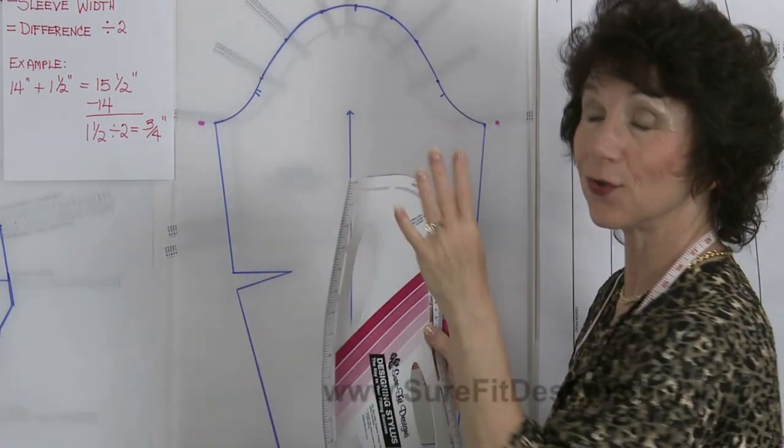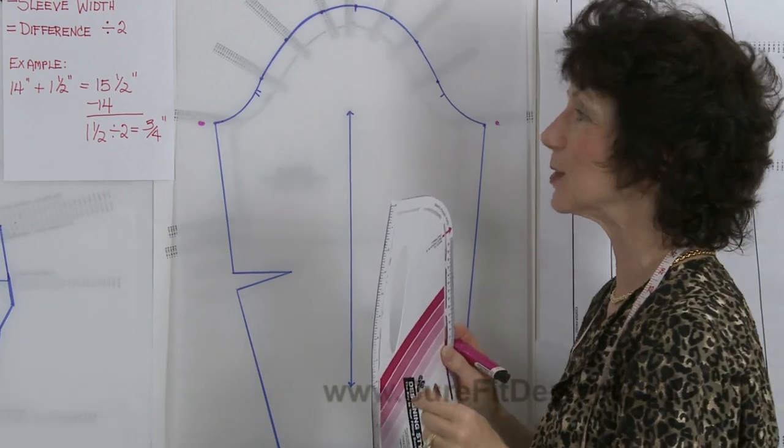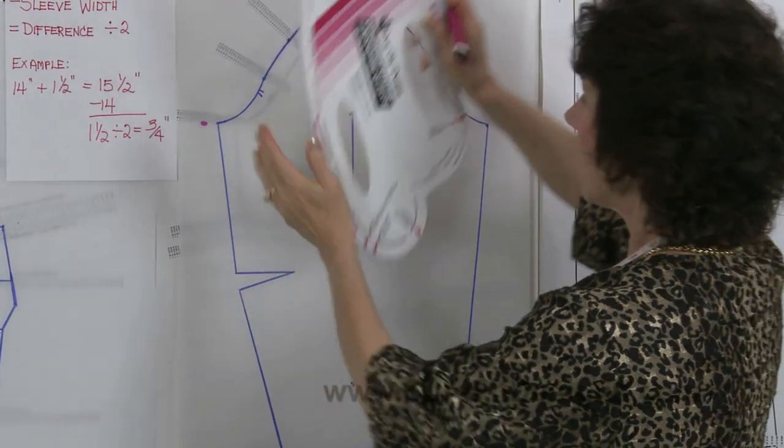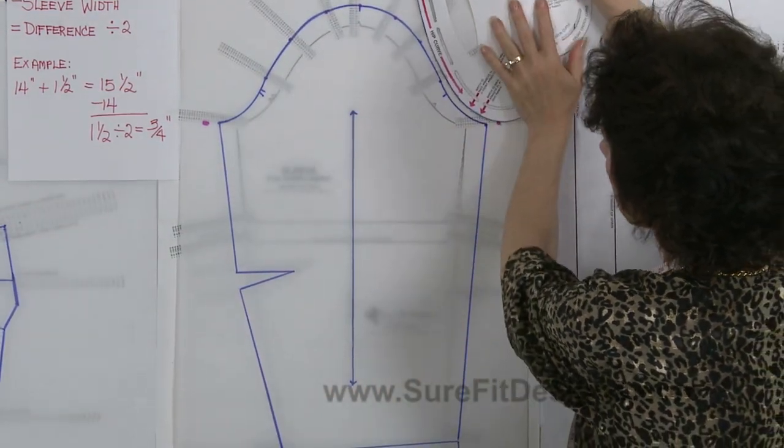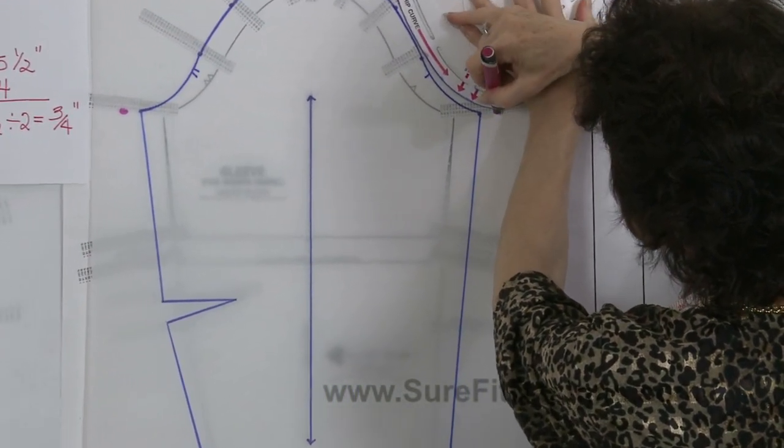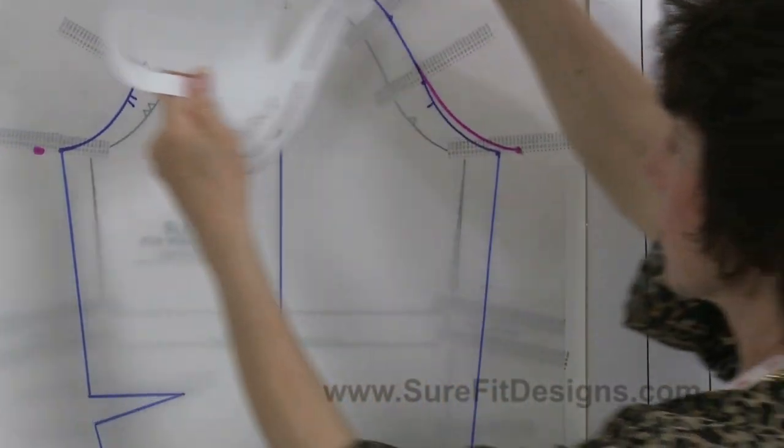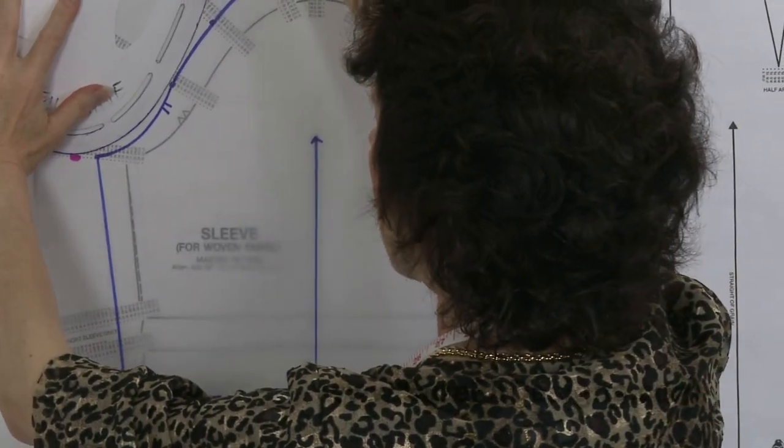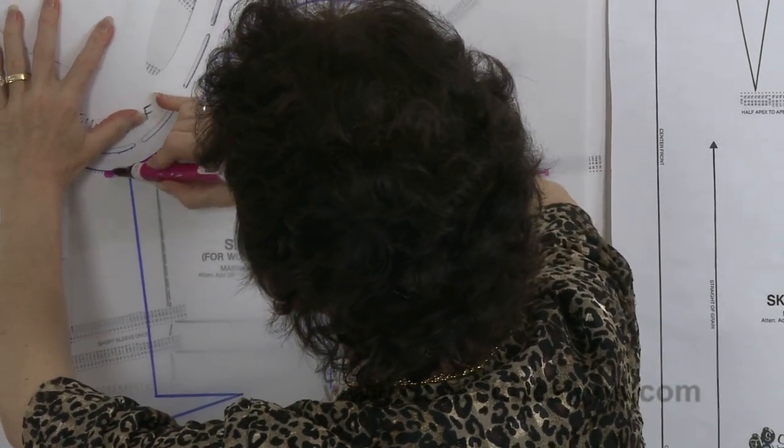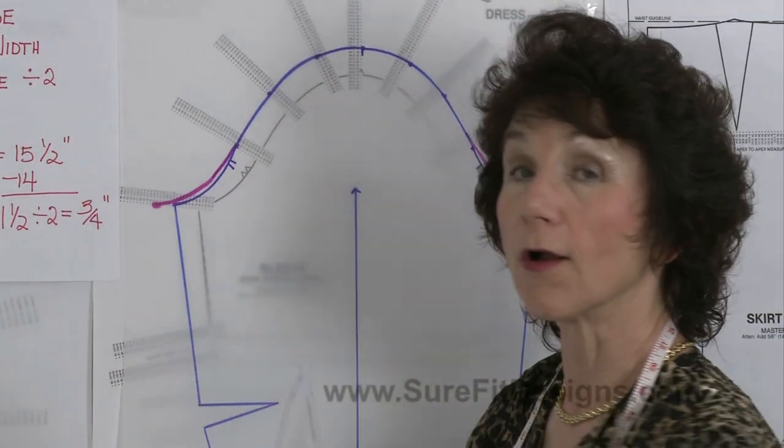Then what you will do is first of all pencil this in. You know that I use these dark marking pens so that everybody can see what I'm doing, but at home you'll obviously want to be using your pencil. Then take your designing stylus and blend this back into the current sleeve cap, so it would look approximately like this. And you do the same thing on the back side of the sleeve.